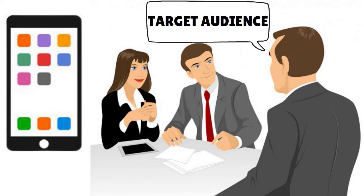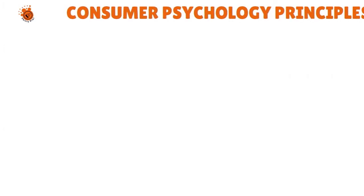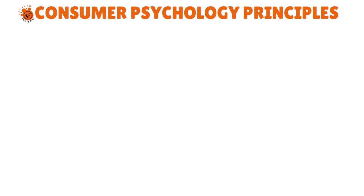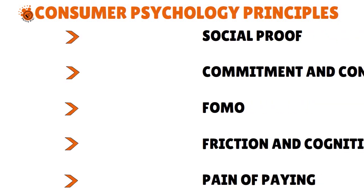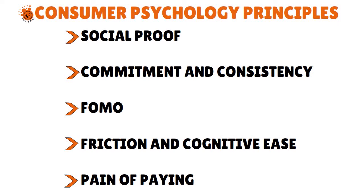Speaking of consumer psychology, there are a few elements to pay attention to: social proof, commitment and consistency — your brand must be known for something — and FOMO, fear of missing out, which is great if your niche has highly engaged customers. Also consider friction and cognitive ease: the level of satisfaction customers have when purchasing your product, and your pricing strategy — how high or low your price is — and pricing segmentation.